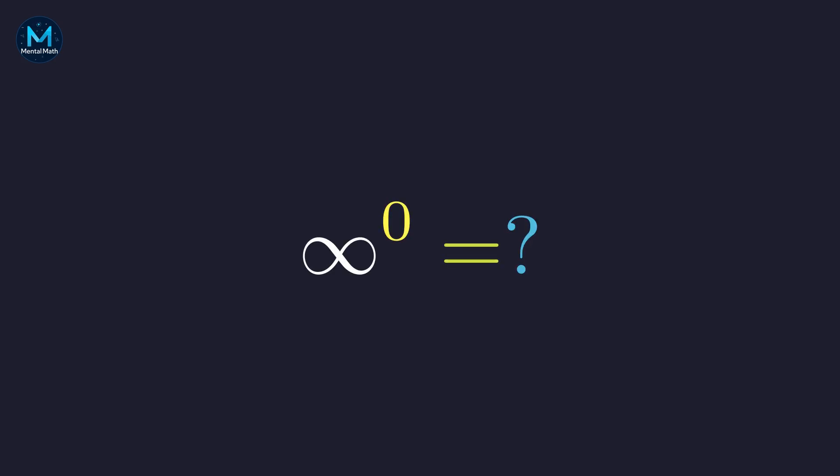Welcome back to Mental Math. Infinity to the power of zero — this looks straightforward, but there's a subtle tension here. One perspective says anything to the power of zero should be one. Another says infinity raised to any power stays infinity. So what happens when these two ideas collide?